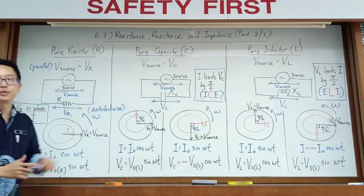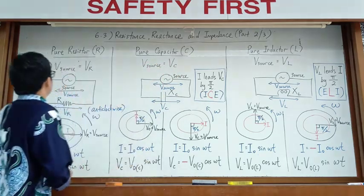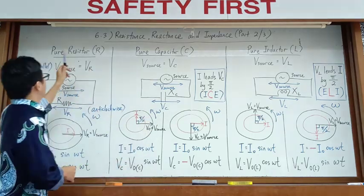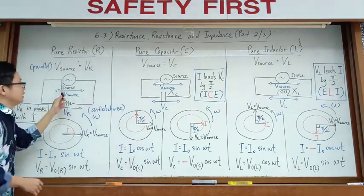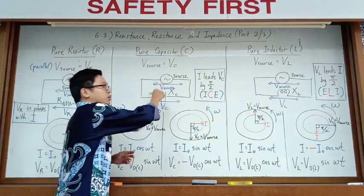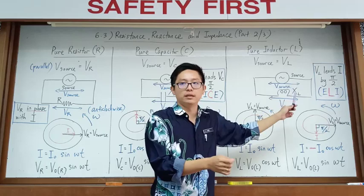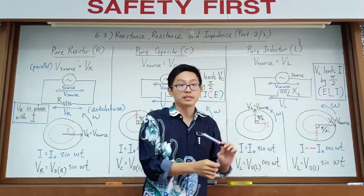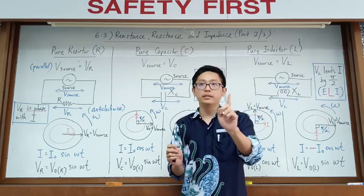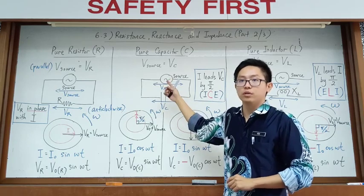We're here in 6.3, Resistant Reactors and Impedors Part 2. Here we have three kinds of circuits. We have a pure resistor circuit with only a resistor, a pure capacitor circuit with only a capacitor, and a pure inductor circuit with only an inductor — no other components. Pure means it only has one component connected to the source voltage.